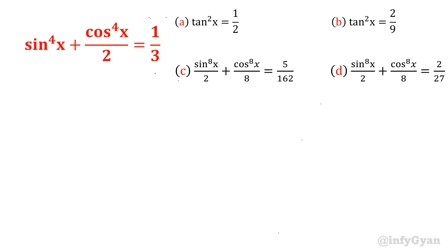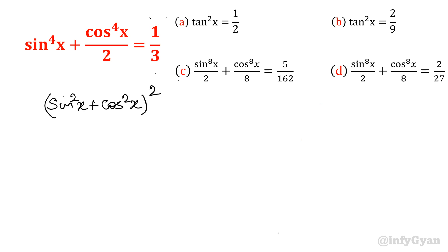The equation is sin⁴x plus cos⁴x over 2, equal to 1 over 3. How will we start? Step by step we will see how to approach this kind of question. With sin and cosine both present and raised to the power 4 with a plus in between, it should come to mind to use sin²x plus cos²x. If we take the square of that, then sin⁴x and cos⁴x will appear.